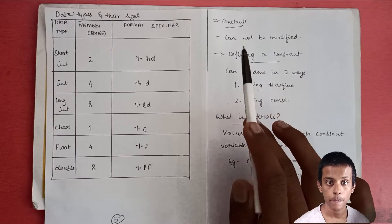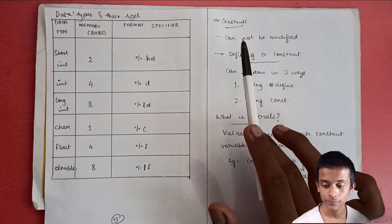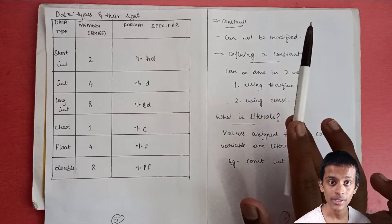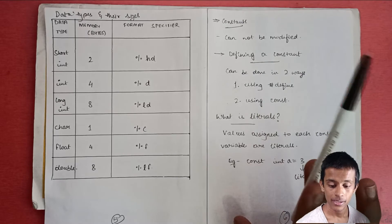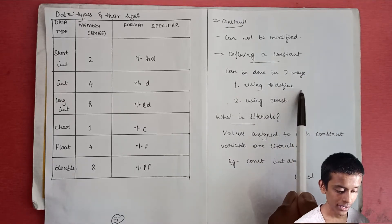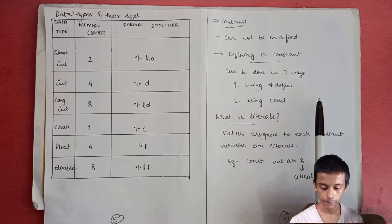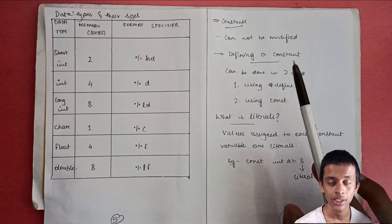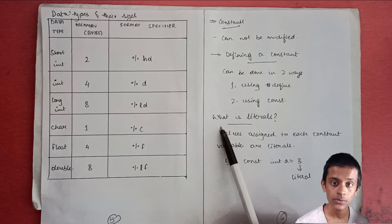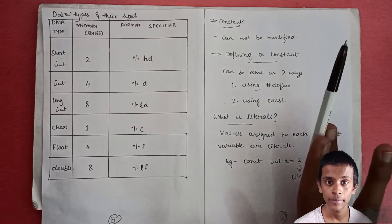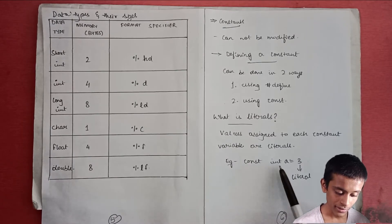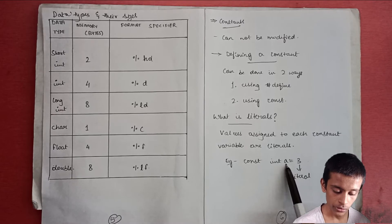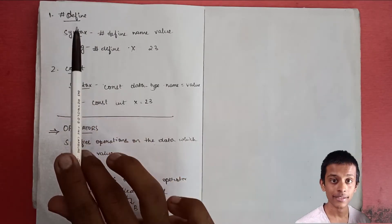Constants, as the name suggests, are variables or values which cannot be modified once they are declared or defined — they are a fixed value in a program. In C, we can define constants in two ways: one by using the #define preprocessor directive, and two by using the 'const' keyword. There's also the term 'literals' — the values referred to by each constant variable are referred to as literals. For example, 'const int a = 3' — the value 3 is known as a literal.